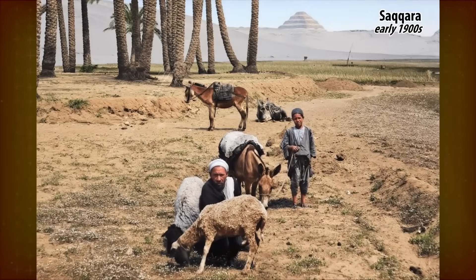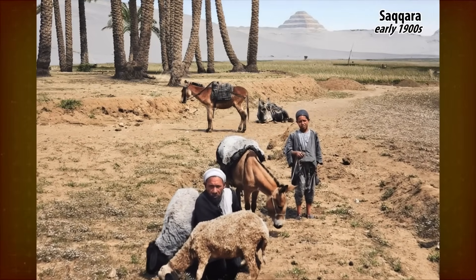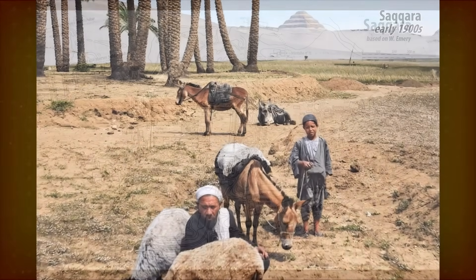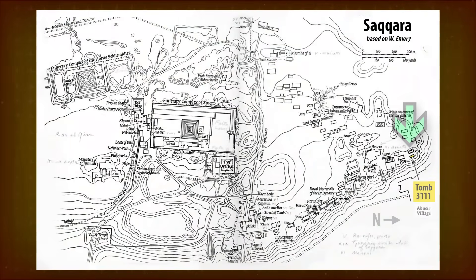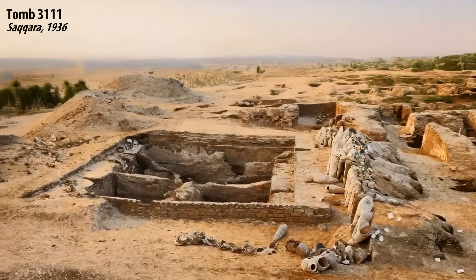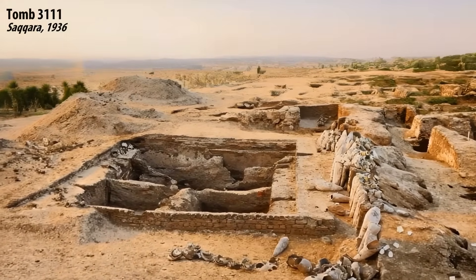We'll now describe the object's discovery, adding details that are often omitted. The disk was discovered in 1936 by Walter Emery on the northern edge of the Saqqara necropolis, in tomb number 3111. The tomb belonged to Sabu, an official under King Anijib in Egypt's First Dynasty.